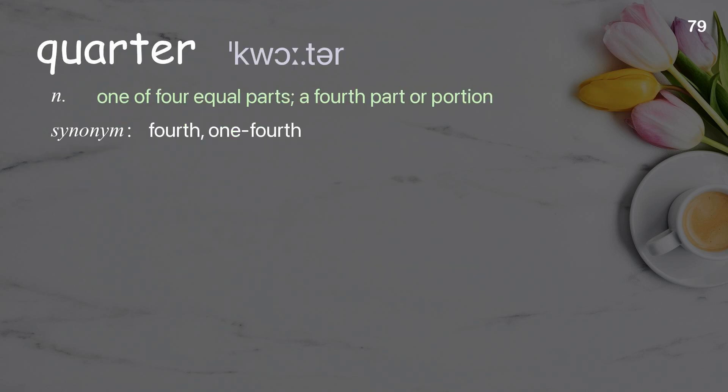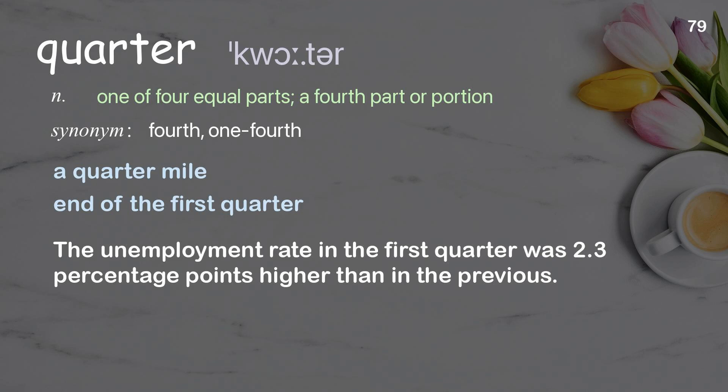Quarter. One of four equal parts; a fourth part or portion. Examples: A quarter mile. End of the first quarter. The unemployment rate in the first quarter was 2.3 percentage points higher than in the previous quarter.